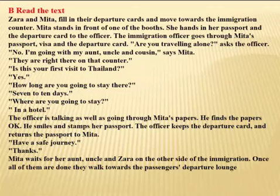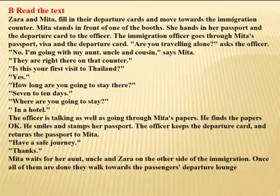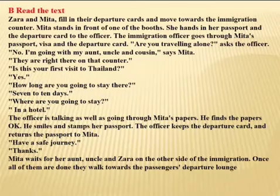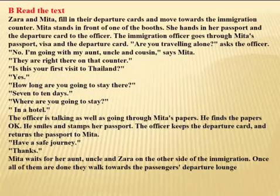The immigration officer checks Mitha's passport, visa and departure card. Goes through means to examine or scrutinize. Passport means an official document issued by the government certifying the holder's identity and citizenship. Visa means a permit to enter and leave a country, normally issued by the authorities of the country to be visited. The immigration officer asks: are you traveling alone? Mitha replies: no, I am going with my aunt, uncle and a cousin. They are right there at that counter.